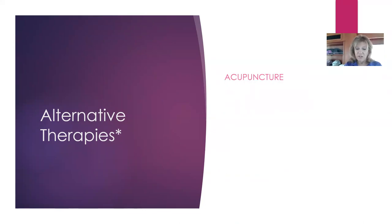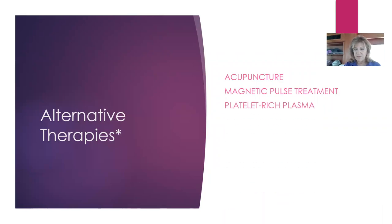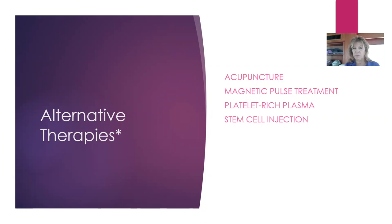Alternative therapies include acupuncture, which uses fine needles to stimulate specific body areas to relieve pain — make sure your acupuncturist is certified and sterilizes their needles. There's also magnetic pulse treatment, applied to the knee. Platelet-rich plasma (PRP) is where your platelets are separated from your blood and re-injected into your knee — the platelets contain growth factors thought to reduce inflammation. Stem cells, basic cells found in your blood with potential to grow into new tissue, can also be injected into a joint space.